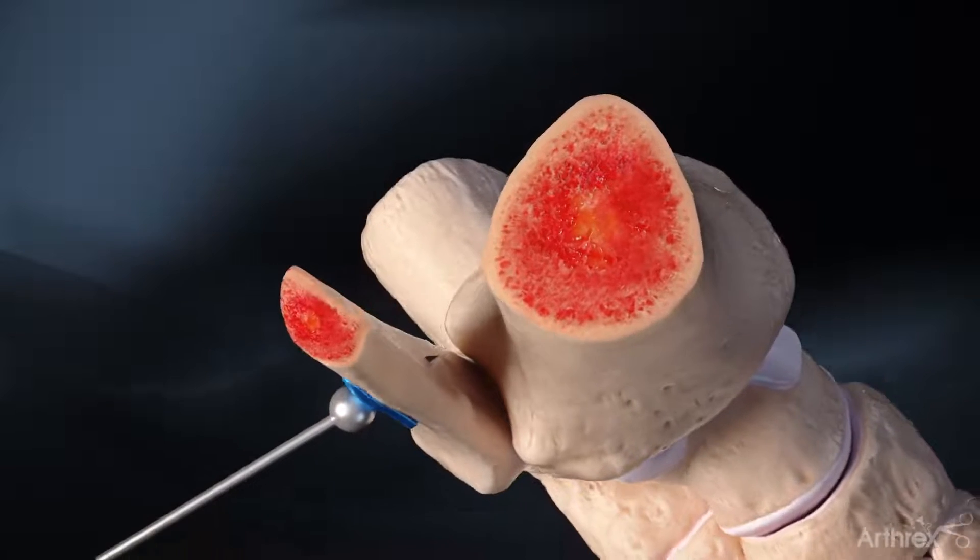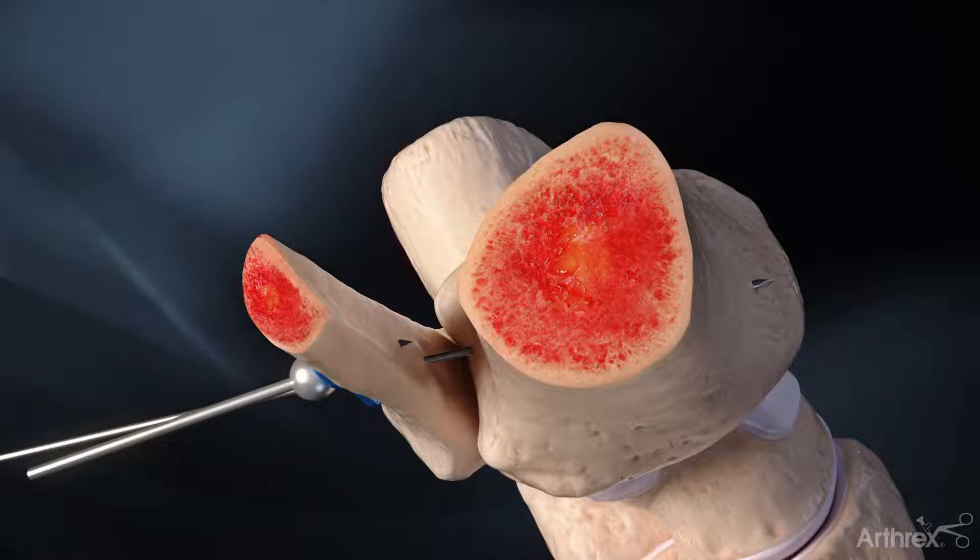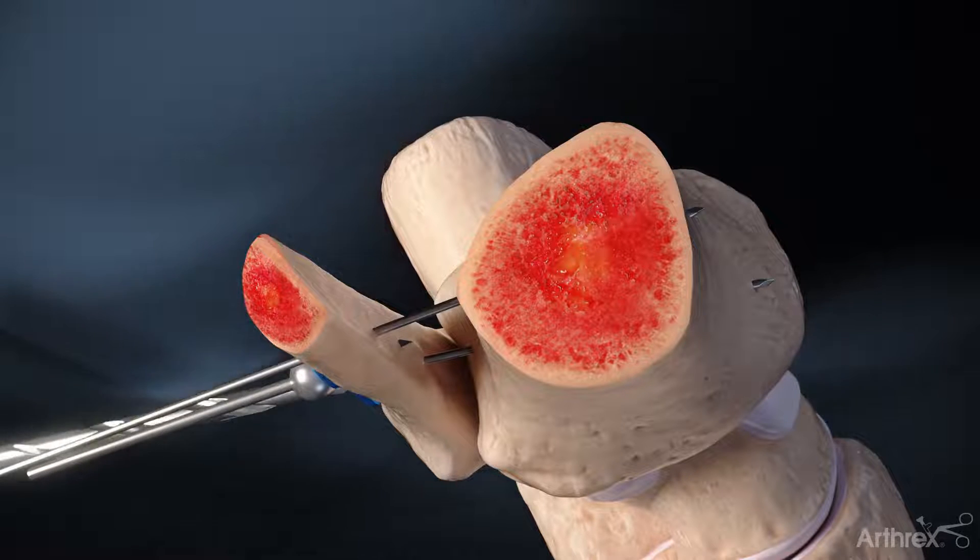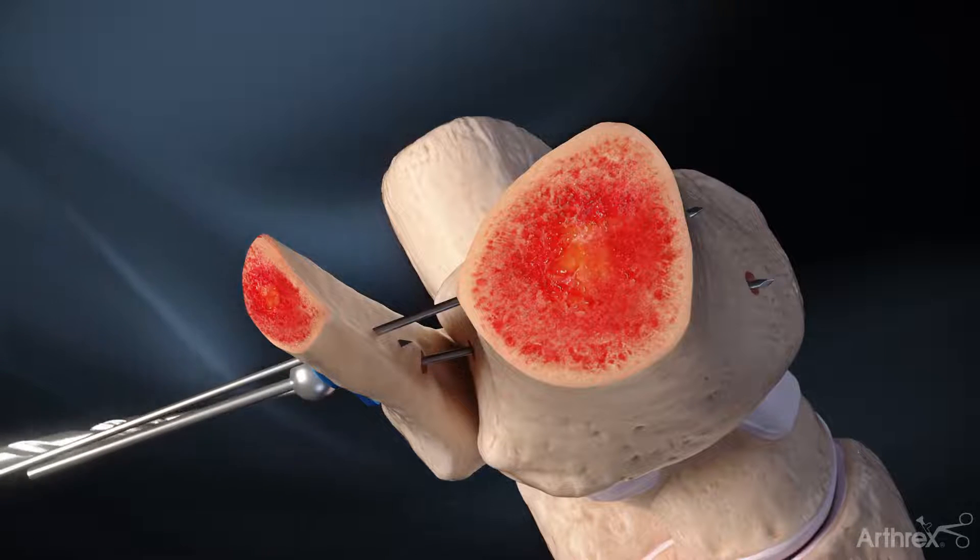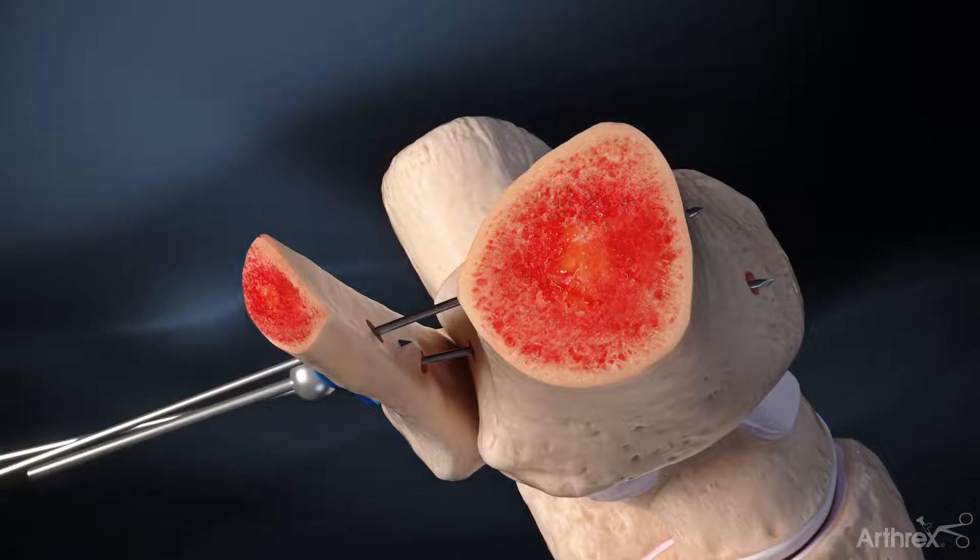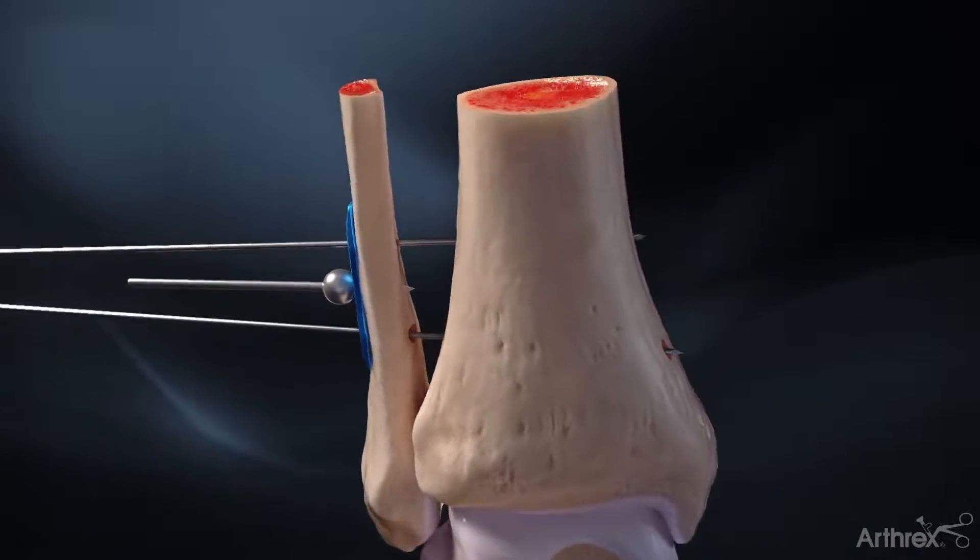Insert the K wire through the distal hole aiming 30 degrees anterior on the medial tibia. A second K wire is inserted in a diverging fashion. A 3.7 mm cannulated drill is used. The inferior K wire is removed.